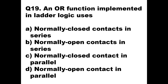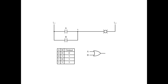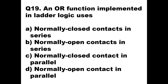Question number eighteen: an OR function implemented in ladder logic uses which contacts? Option D, normally open contacts in parallel, is the right answer. Normally open contacts A and B in parallel give the OR operation: output is 0 for (0,0), and 1 for (0,1), (1,0), and (1,1). This truth table confirms it functions as an OR gate. So OR function is obtained by normally open contacts in parallel.